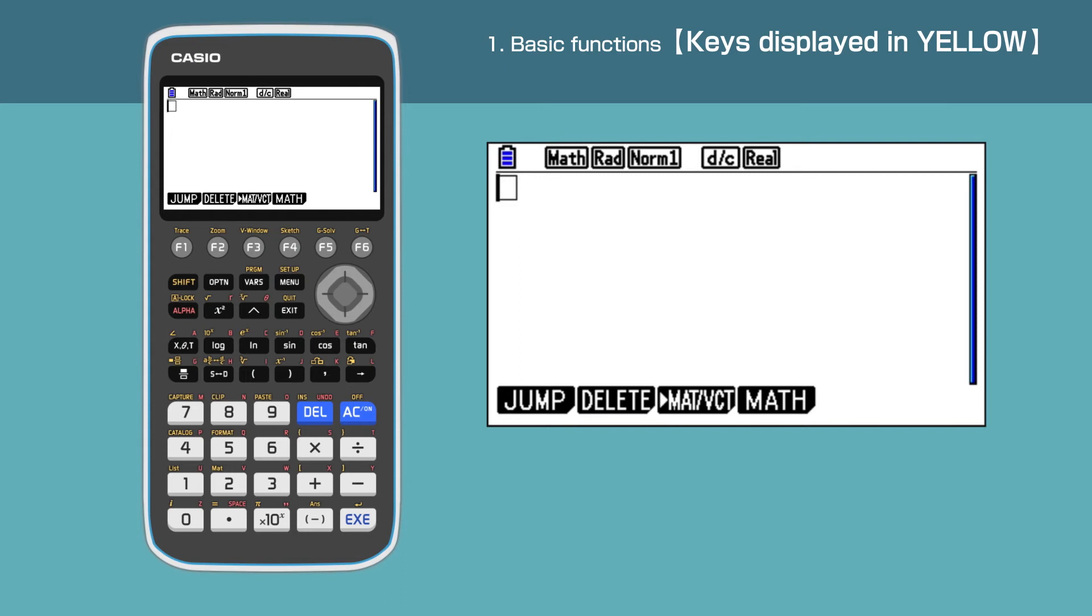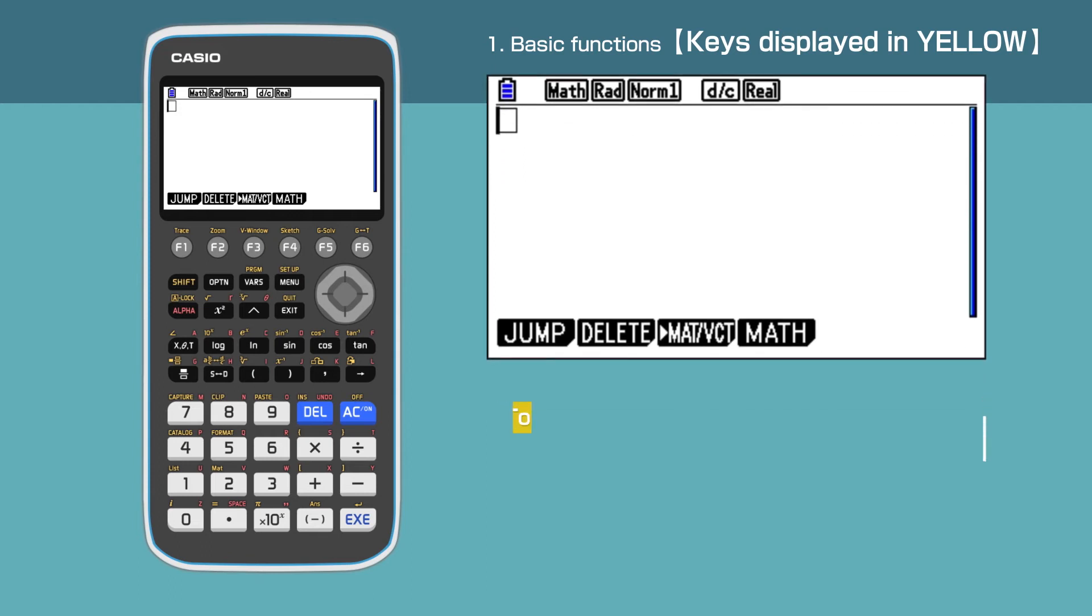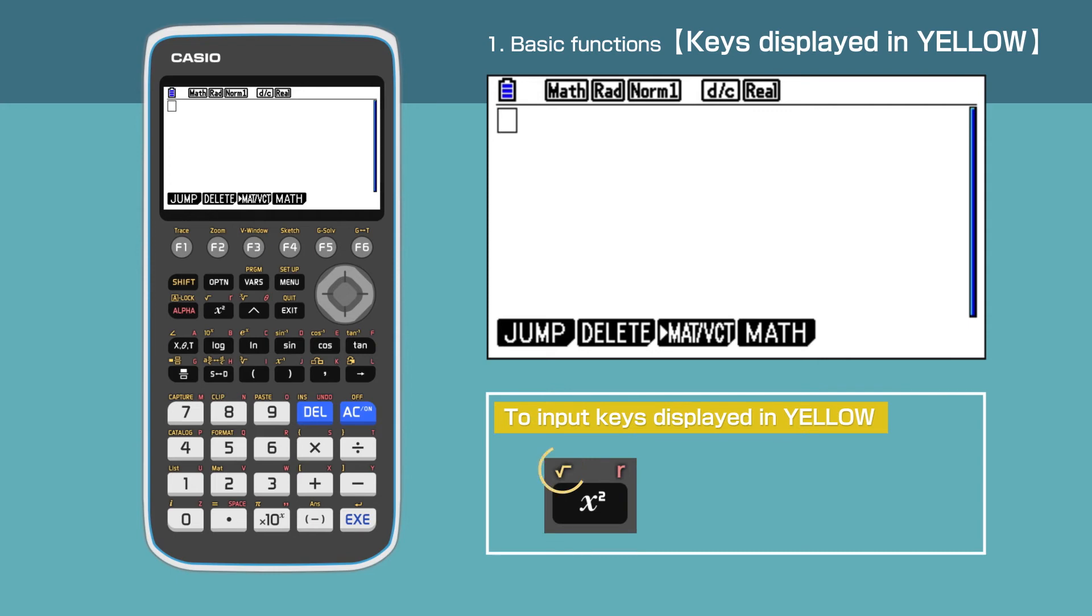For example, if we want to take the square root, we press shift to select keys in yellow before pressing the x squared button. When we press shift, the symbol S in yellow will appear at the top left corner of the screen.